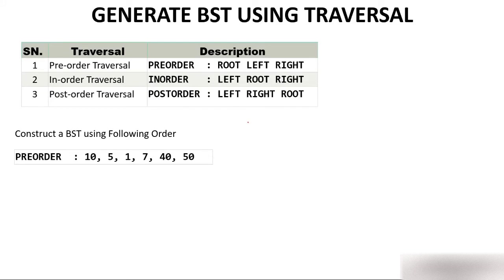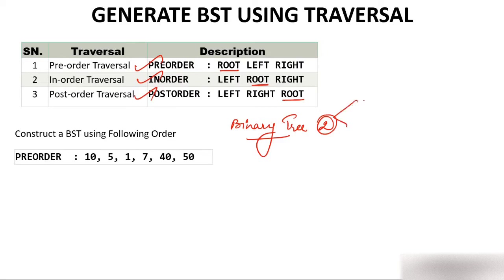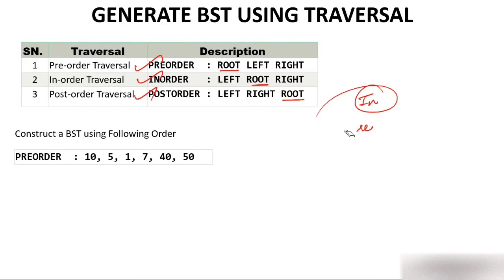As I explained, there are three traversals: pre-order traversal, in-order traversal, and post-order traversal. In pre-order, root comes first. In in-order, root comes in the middle. In post-order, root comes last. In order to construct a binary tree, two orders are compulsory - one is in-order, and the second could be pre or post. Now this question is different: you are asked to construct a binary search tree but given only one order. Do not get confused - it is a perfectly valid question.